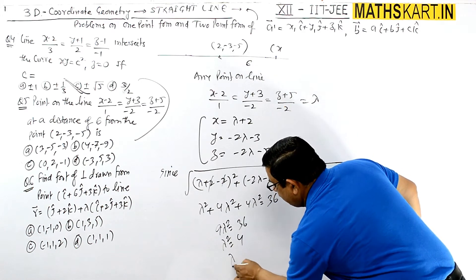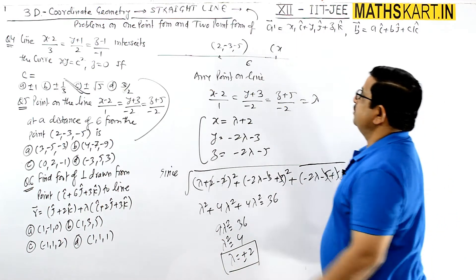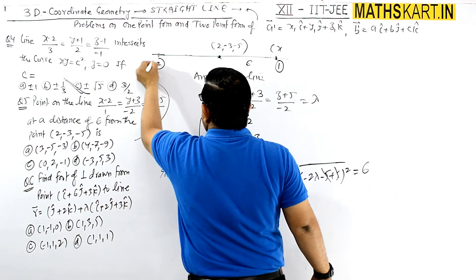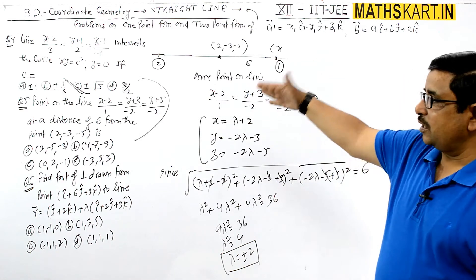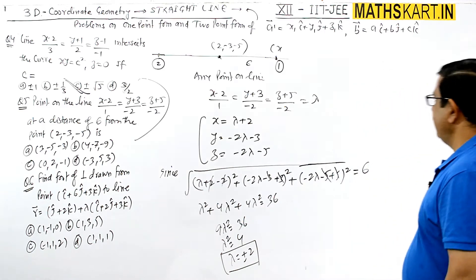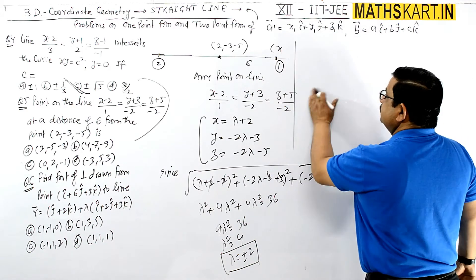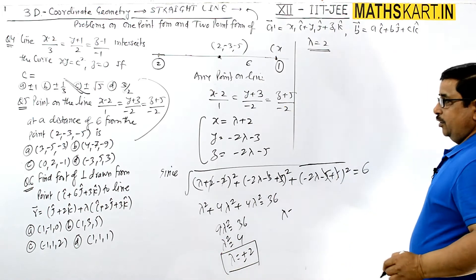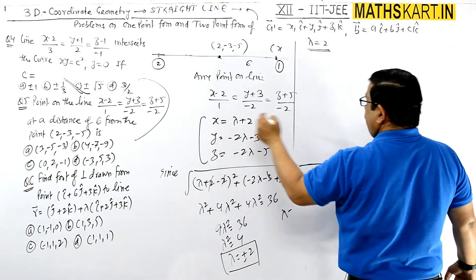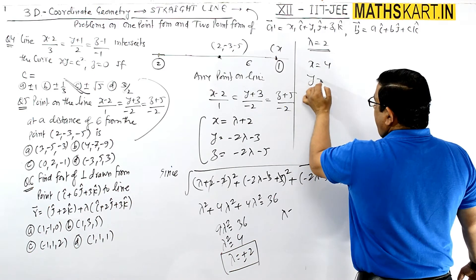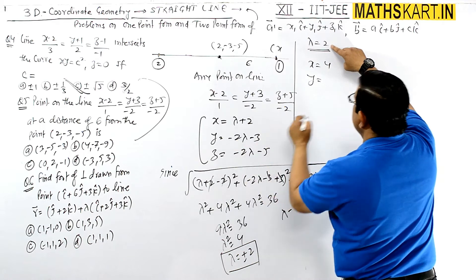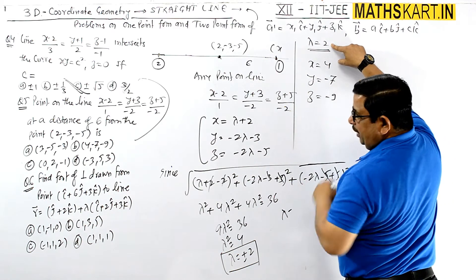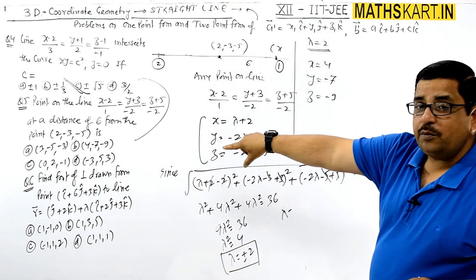So lambda² = 4, giving lambda = ±2. Now there are two possible points on this line at distance 6. For lambda = 2: x = lambda + 2 = 4, y = -2(2) - 3 = -7, z = -2(2) - 5 = -9. So the point is (4, -7, -9). This is given as the correct option. So option is correct.